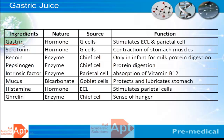Gastrin is a hormone secreted by G cells; it stimulates ECL and parietal cells for secretion of hydrochloric acid. Serotonin is responsible for contraction of stomach muscles. Rennin is present only in infants for digestion of milk protein and is no longer secreted as the individual grows older. Pepsinogen, the most important enzyme, is converted to active pepsin by hydrochloric acid and is primarily responsible for protein digestion. Gastric intrinsic factor, also secreted by parietal cells, plays a prominent role in absorption of vitamin B12.